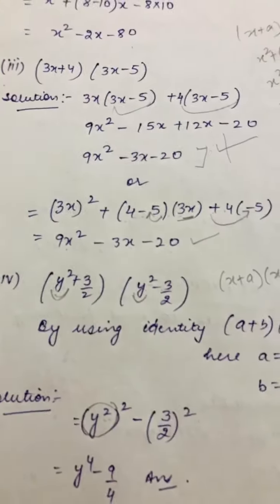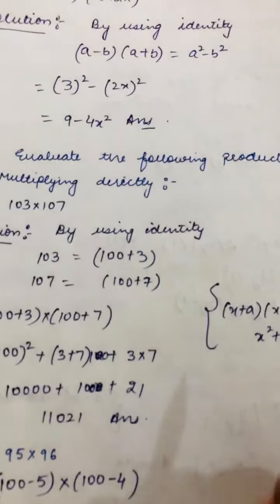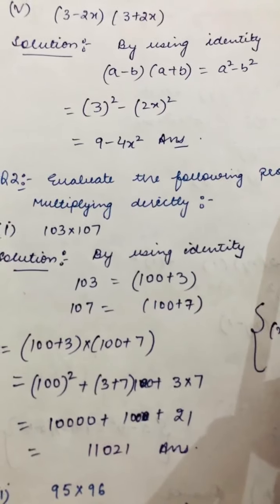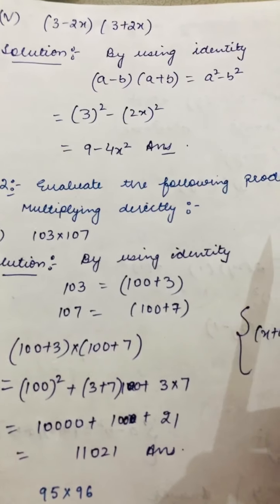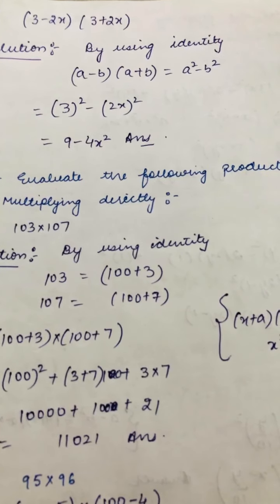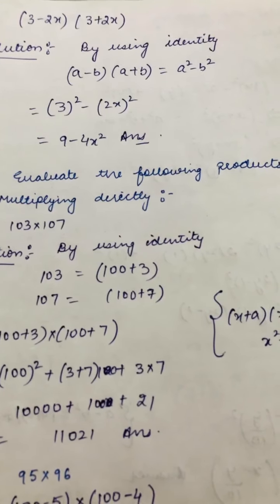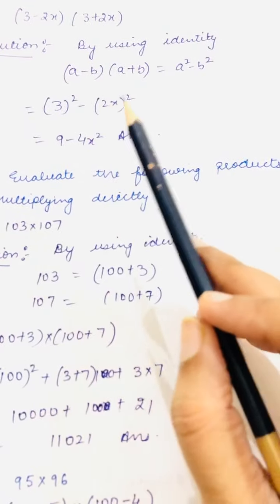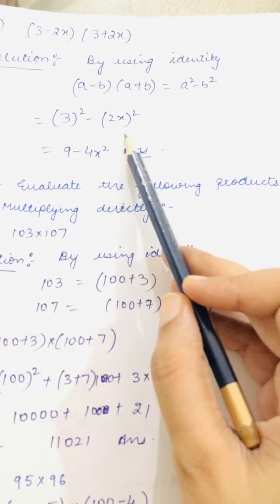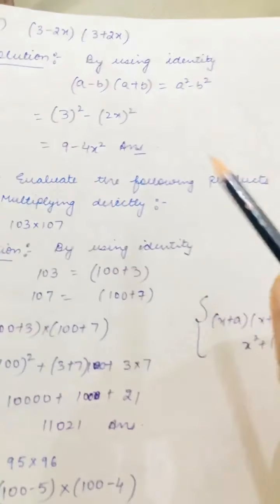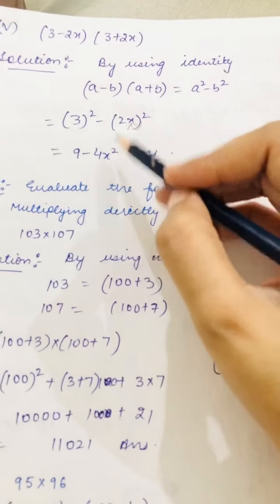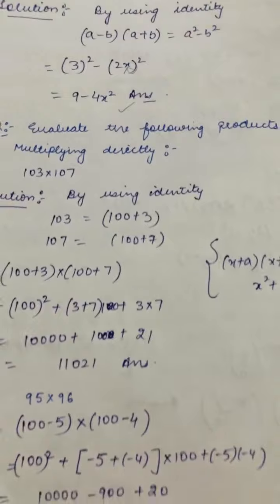Now the next question is the fifth question, question number 1's fifth part, which is the last part: (3-2x)(3+2x). Now which formula is being applied here? You can apply (x+a)(x-b), but here both a and b are the same, x is also the same. So it's better to use the formula a-b and a+b. The formula is a² - b². And a is 3 squared, b is 2x squared. 3 squared is 9. 2×2=4, and you have to square x also, so x squared came. 9 - 4x², minus sign is there. This is the answer.